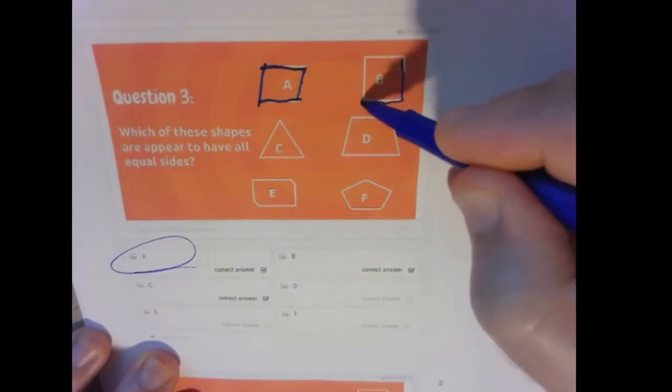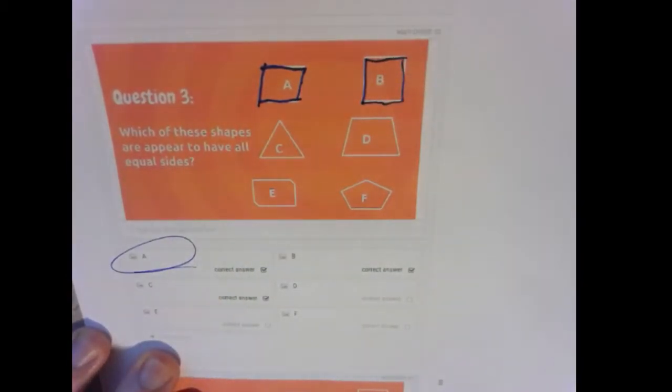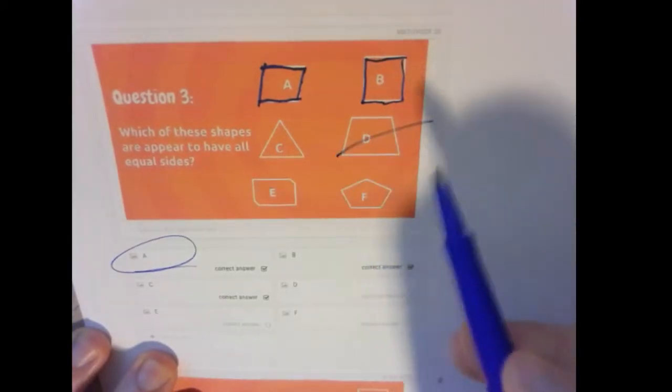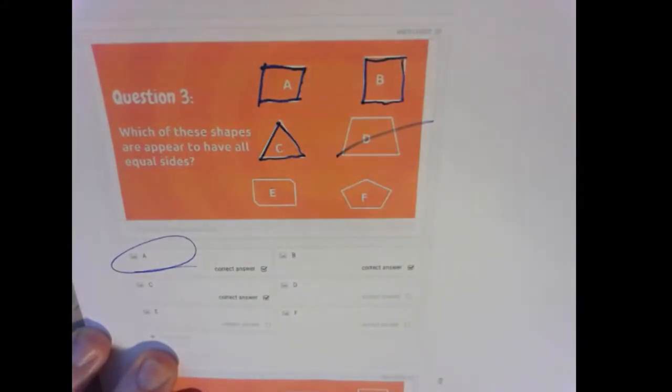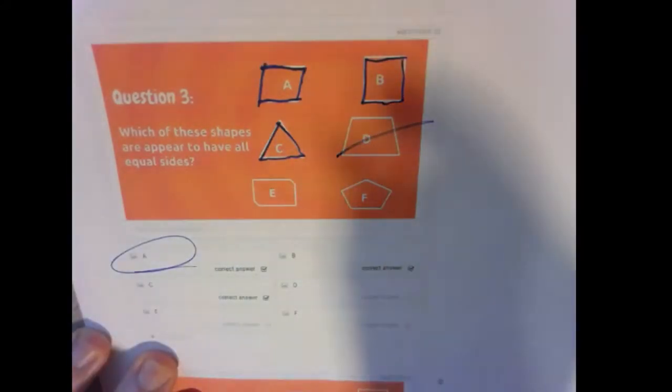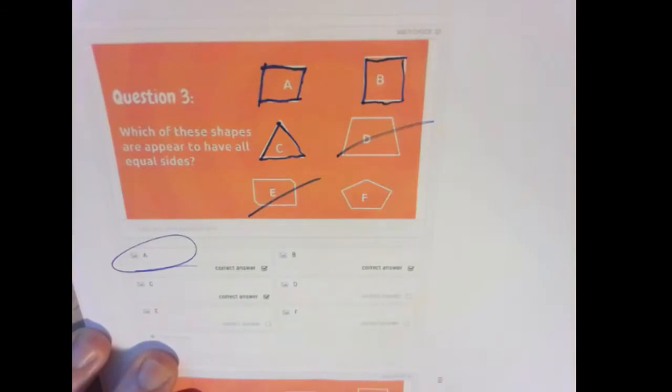B, these four sides look to be equal. D, not so. This triangle, all three sides appear to be equal.